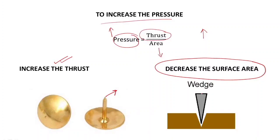Another example is a wedge — any sharp tool required to cut through an object, like a knife used to chop vegetables. The wedge has a sharp, pointed edge so it can cut through surfaces. Since the area is pointed, the area is very small, so the pressure increases. By applying a small amount of force, you can create a large amount of pressure. So the wedge is another example.